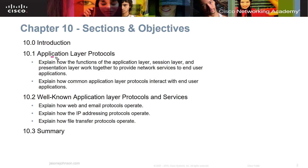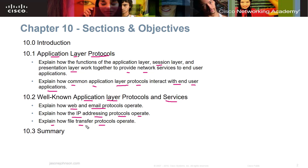In Chapter 10 we're going to look at application layer protocols, explain how the functions of the application layer, the session layer, and the presentation layer work together to provide network services, explain how common application layer protocols interact with end-user applications, and look at well-known protocols and services including web applications, email protocols, IP addressing protocols, and file transfer protocols.